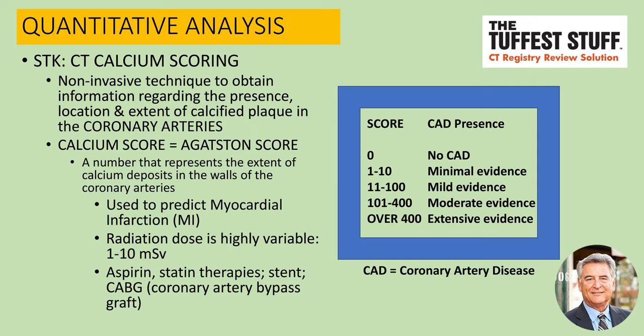The Agatston score, or calcium score, is used to predict myocardial infarction. With the CT calcium scoring evaluation, radiation dose is highly variable. It's approximately 1 to 10 millisieverts, depending on how the examination is conducted.